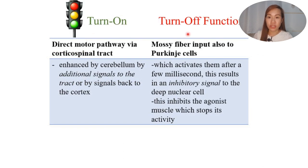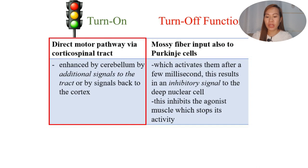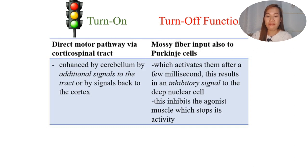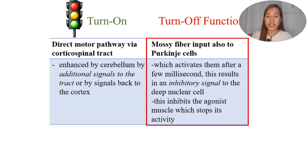There is a turn-on and turn-off function. The direct motor pathway via the corticospinal tract — the turn-on — is enhanced by the cerebellum through additional signals to the tract or by signals back to the cortex. For the turn-off function, mossy fiber input to Purkinje cells activates them after a few milliseconds delay, resulting in an inhibitory signal to the deep nuclear cell, which then inhibits the agonist muscle and stops its activity.